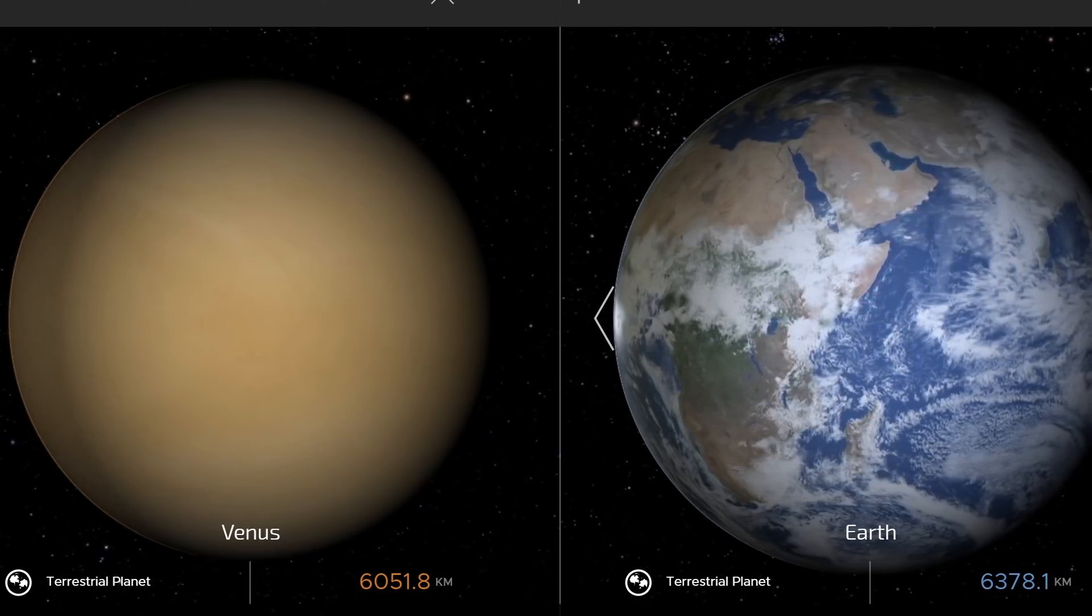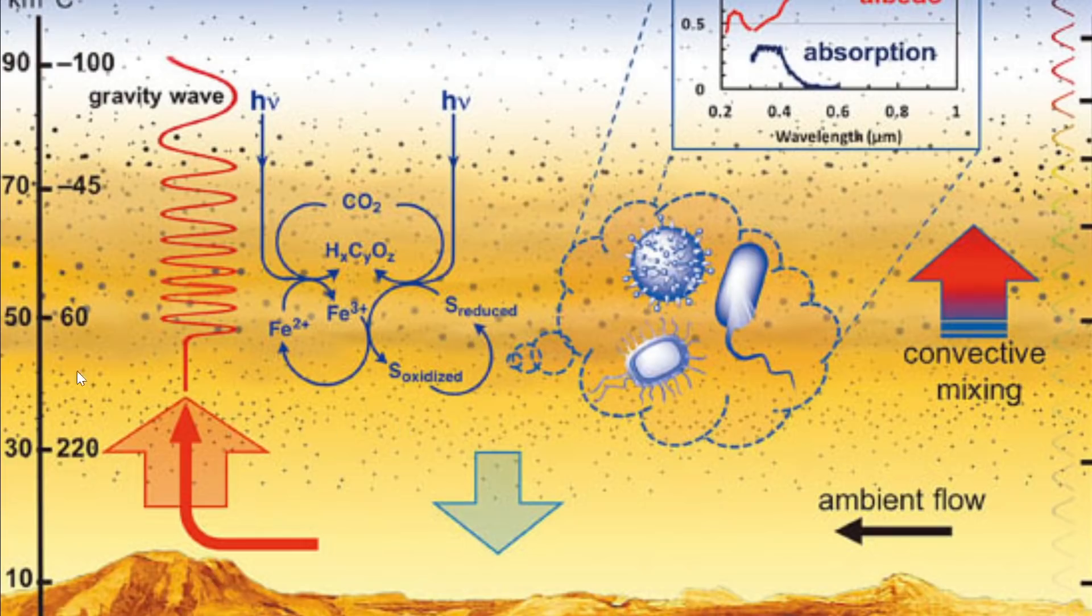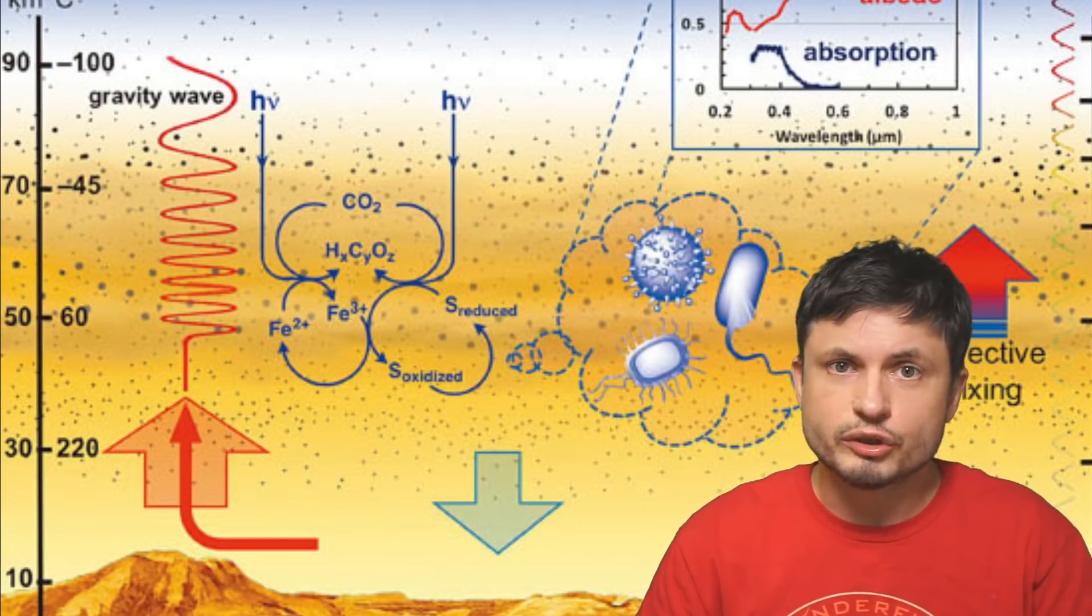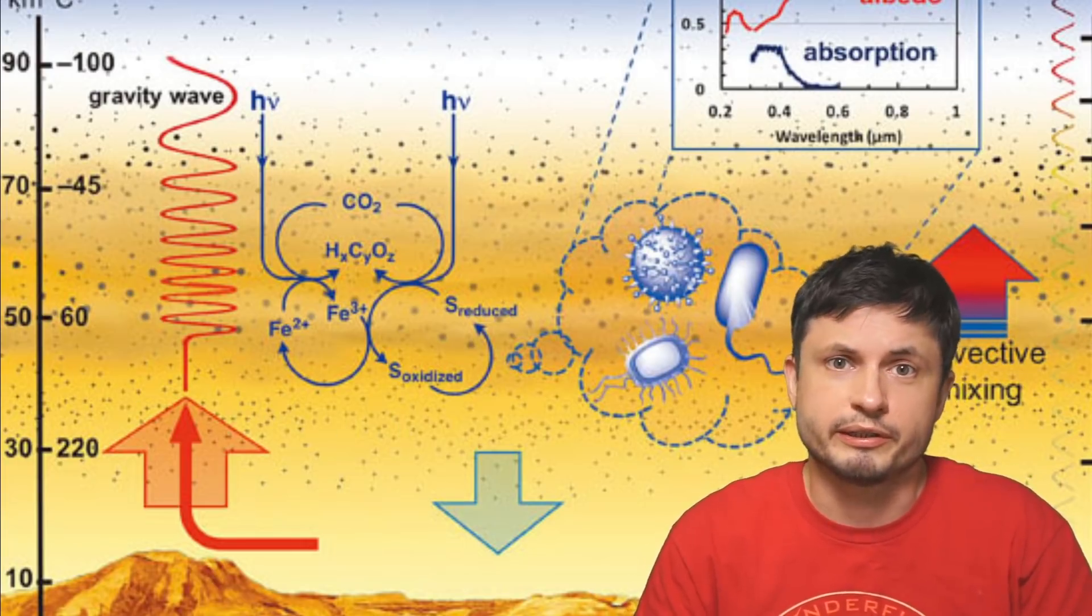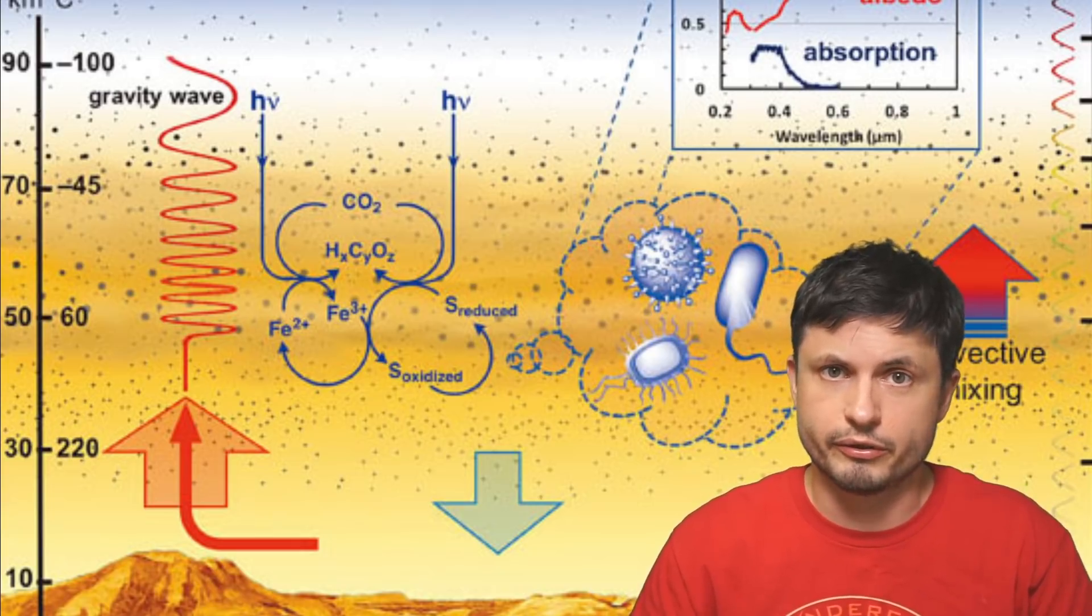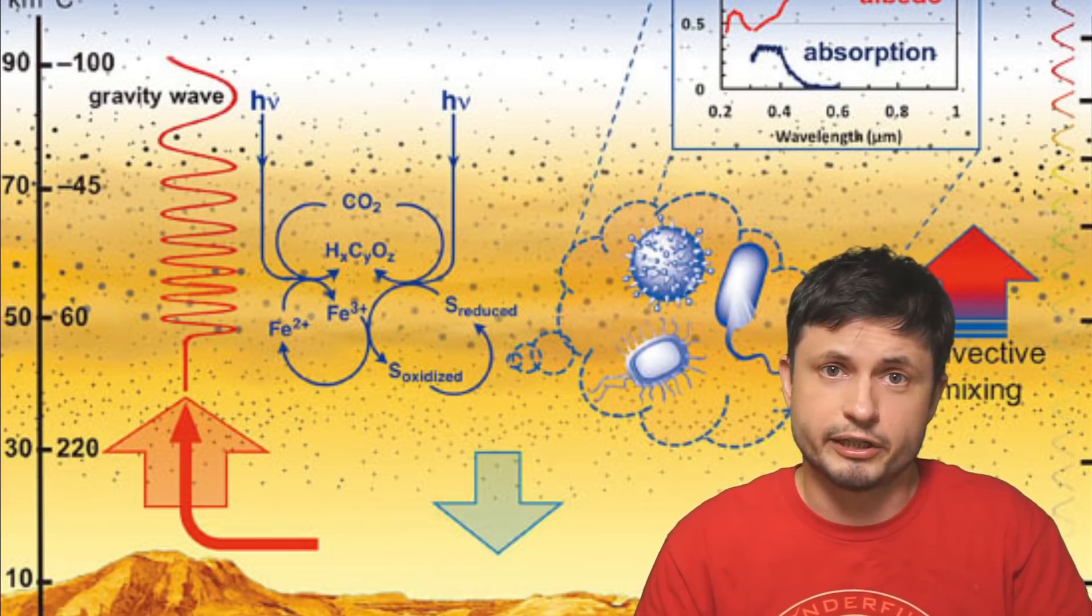But if we go higher up in the atmosphere of Venus, we'll actually find certain areas where the temperature, the pressure, and a lot of other conditions actually sort of resemble the atmospheric pressure and temperature right here on planet Earth. But all of this happens approximately 50 to 70 kilometers up in the air.